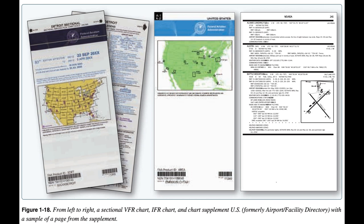Some reasons NOTAMs are issued include: (1) hazards such as air shows, parachute jumps, kite flying, and rocket launches; (2) flights by important people such as heads of state; (3) closed runways; (4) inoperable radio navigational aids; (5) military exercises with resulting airspace restrictions; (6) inoperable lights on tall obstructions; (7) temporary erection of obstacles near airfields; (8) passage of flocks of birds through airspace (a BIRDTAM); (9) notifications of runway/taxiway/apron status with respect to snow, ice, and standing water (a SNOWTAM); (10) notification of an operationally significant change in volcanic ash or other dust contamination (an ASHTAM); and (11) software code risk announcements with associated patches to reduce specific vulnerabilities.